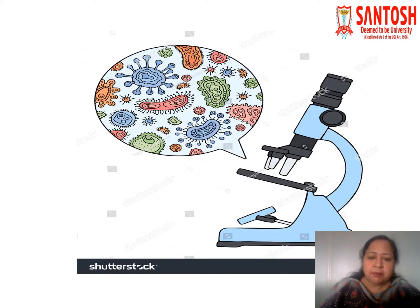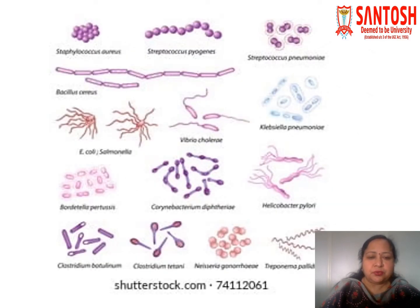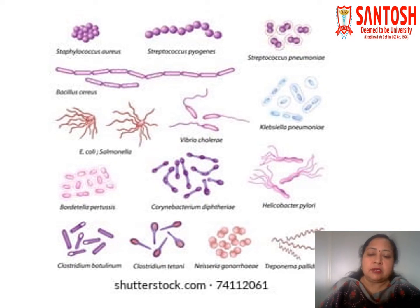This is a picture of a microscope where you can see different microbes and identify different organisms. And this picture shows various bacteria according to their arrangement and gram stain interpretation. The first picture is Staphylococcus aureus, which is gram-positive cocci in clusters. Gram positive means the organism, when you do gram staining, will take the violet color and appear under the microscope in oil immersion lens as violet.